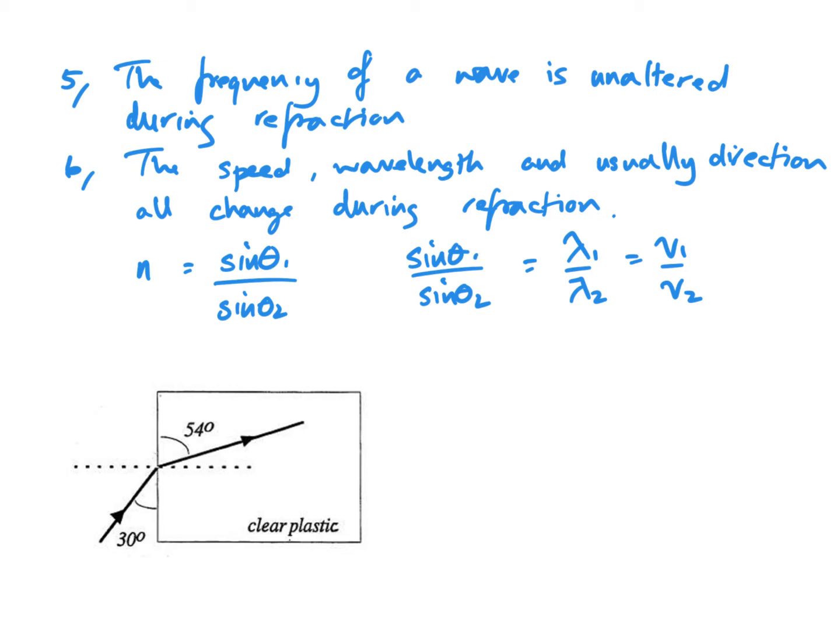This worked example is to find the refractive index of this material. The first thing we've got to notice is that in this example they've given the angles relative to the surface, whereas angles should always be relative to the normal. So we've got a bit of work to do first to work out the actual angle. Theta 1 isn't 30 degrees, theta 1 is 90 minus 30. You just need to look carefully at the diagram to decide whether you subtract it from 90 or if you're just given that angle directly.